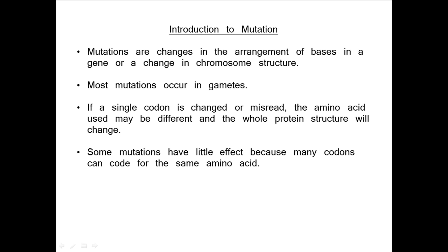Most mutations actually occur within gametes or sex cells, and there are many different types. A likely thing that can happen to a set of DNA bases as it's being read or copied is that one of those single bases might be misread, causing a mistake within the genetic material. This can mean that a different amino acid is coded for, and therefore the protein produced isn't the same, because its primary structure isn't the same. We can refer to that as a point mutation.